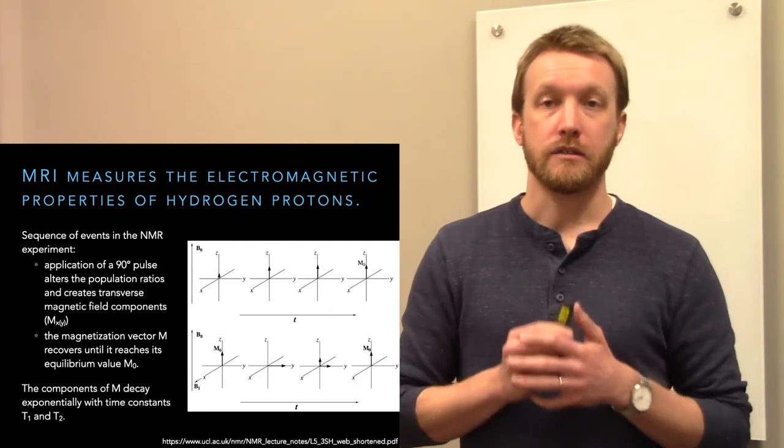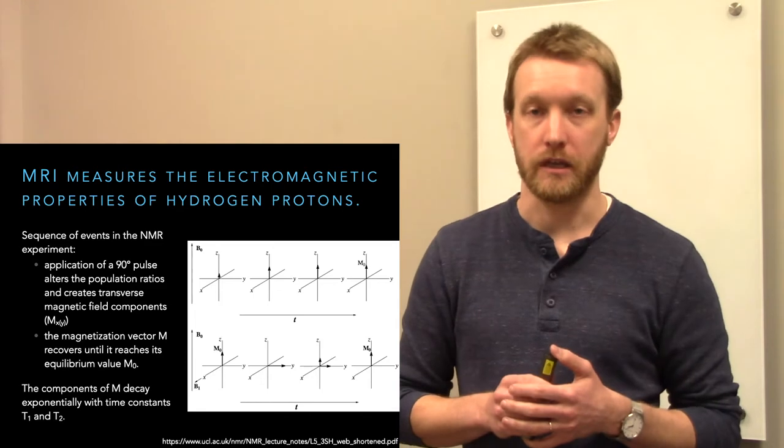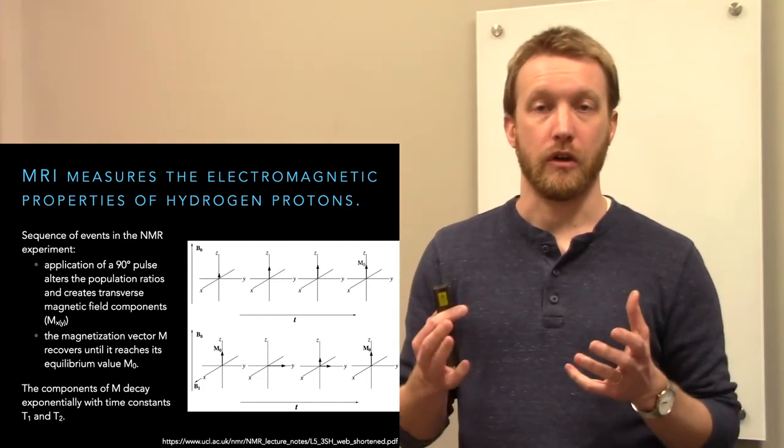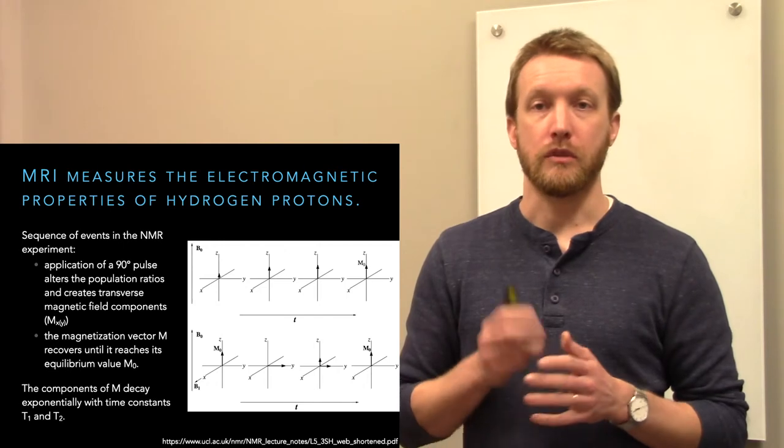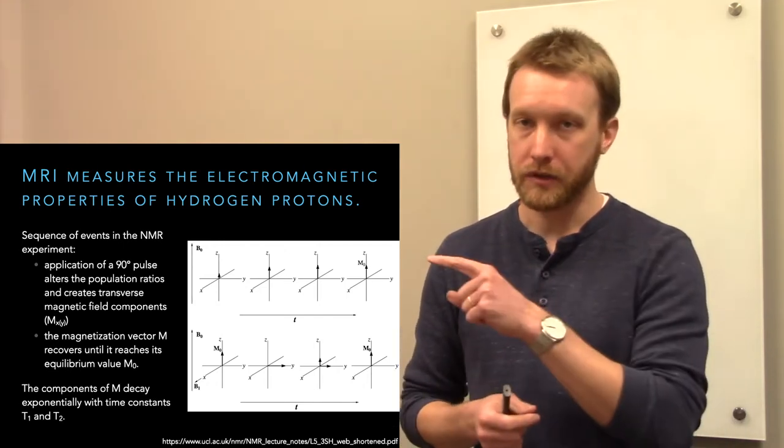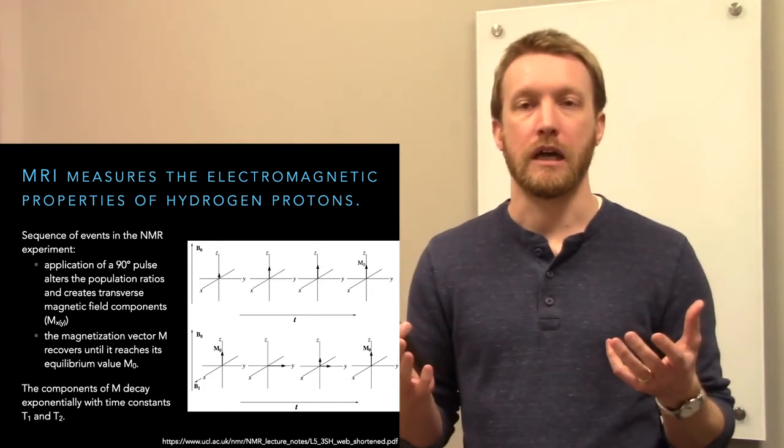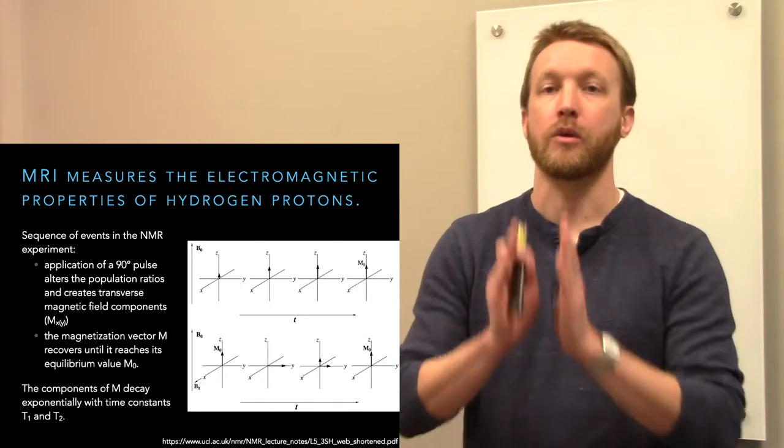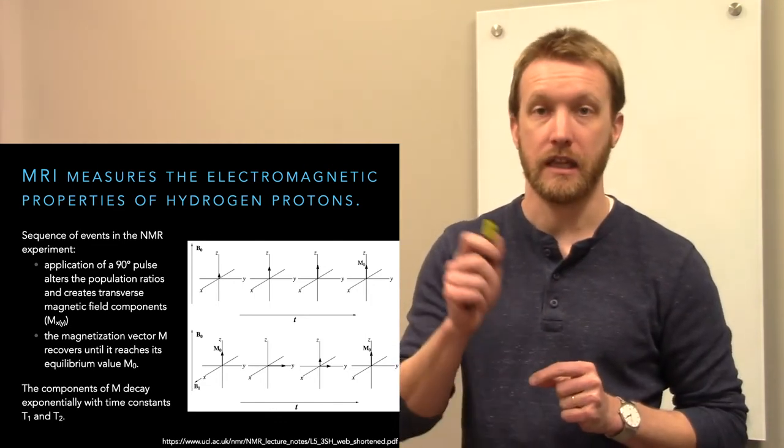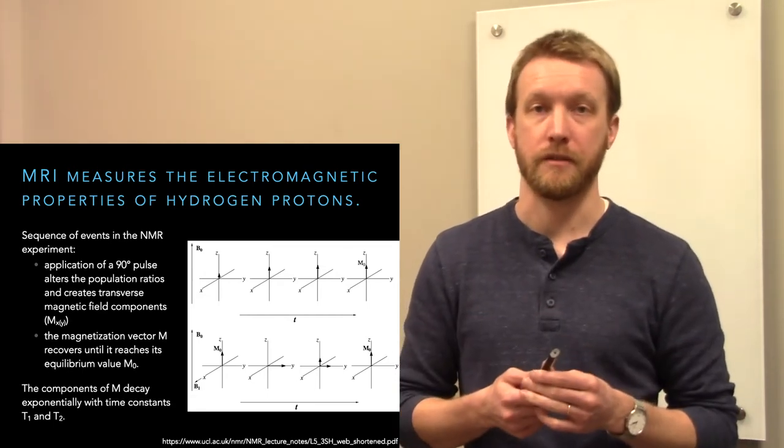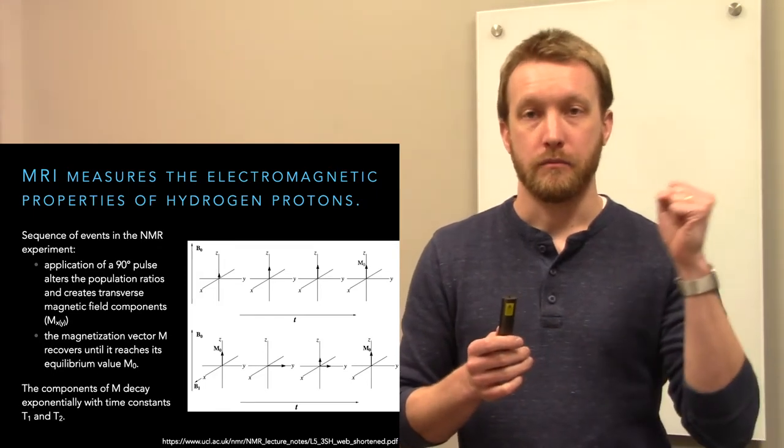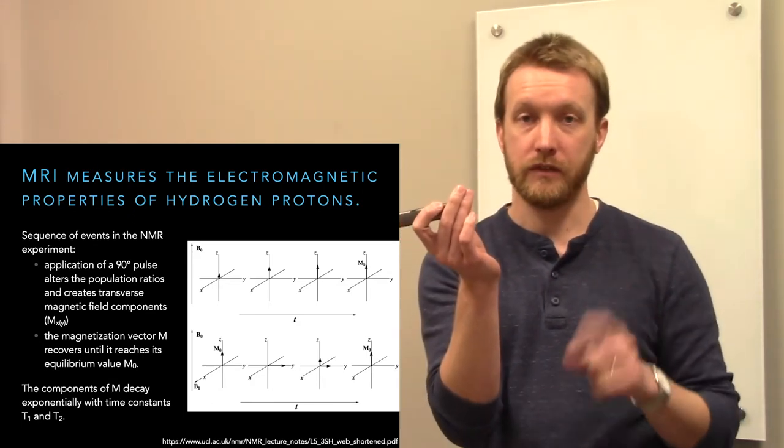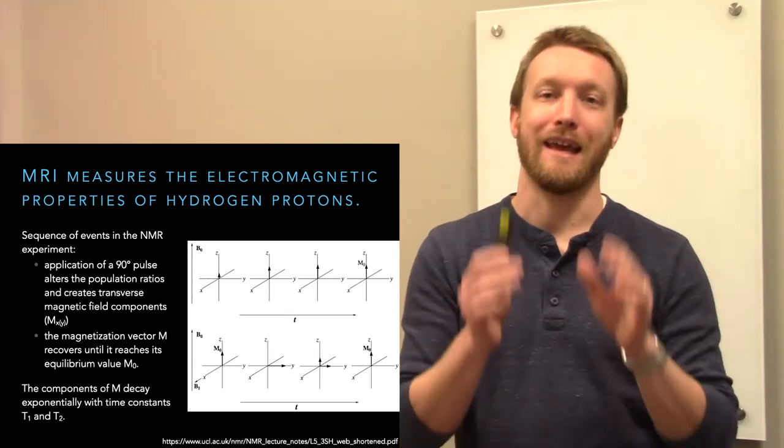MRI doesn't use x-rays, instead it uses magnetic waves and radio waves. These are much safer because they don't damage our DNA. In an MRI we use a very strong magnet to line up the spin states of hydrogen protons. Without any magnetic field applied, the hydrogen protons will just spin in all directions. Once you apply the magnetic wave, it orients them, in this case in the z-axis. Then we apply radio frequency pulses to misalign the spin state. The magnetic field is still there, so they will eventually return. And that's what we're looking at in an MRI.